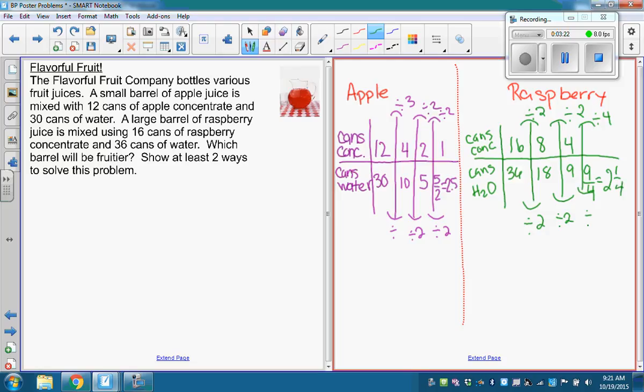So is 2 and a fourth smaller or bigger? Smaller, right? So which one's fruitier? Raspberry. Right. Because it has less water and more concentrate. I had to think about how to spell that. Okay.